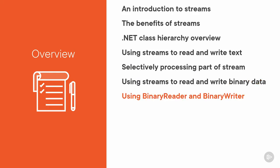When we're working with binary data we can also make use of a couple of classes — the binary reader and binary writer classes, so we'll learn about both of these. In the previous module we learned about text encodings and in this module we'll learn how we can specify encodings when working with streams.